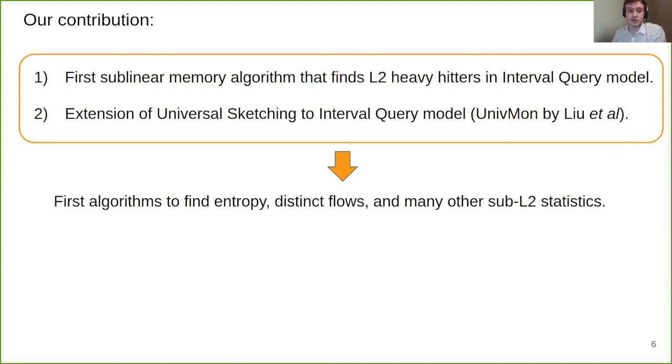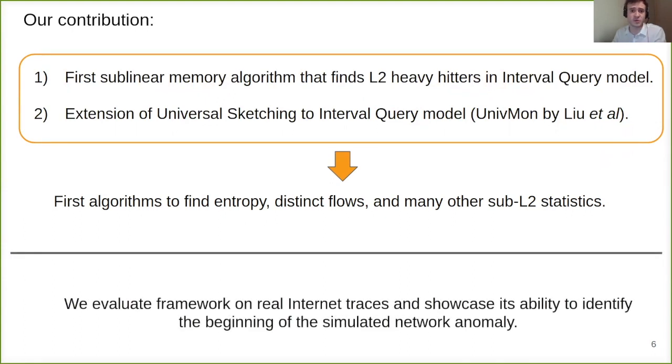Now imagine you can maintain only one sketch and at any moment T ask what's the entropy 35 seconds to 30 seconds ago or what is the number of distinct flows from 15 seconds to 10 seconds ago. All of it using only one sketch which works in sublinear memory. We evaluate the framework on real internet traces and showcase the ability to identify beginning and end of simulated network anomaly.